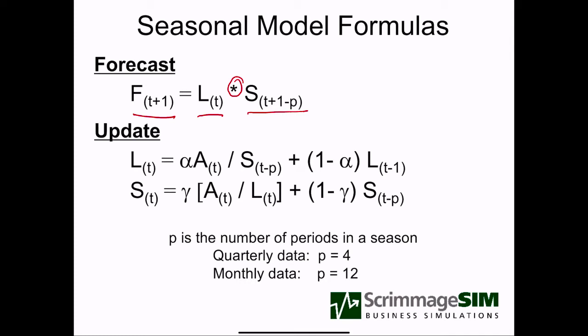So the only time we can tell you what spring looks like is once a year. If we're going to update the spring seasonal factor, we have to look at what we thought a year ago. That's why we have this notation with the p variable. For quarterly data making quarterly forecasts, p will be equal to 4, meaning spring happens every 4 quarters. If we had a monthly model, January would happen every 12 months. This notation will be fairly simple to understand once we look at a numerical example.